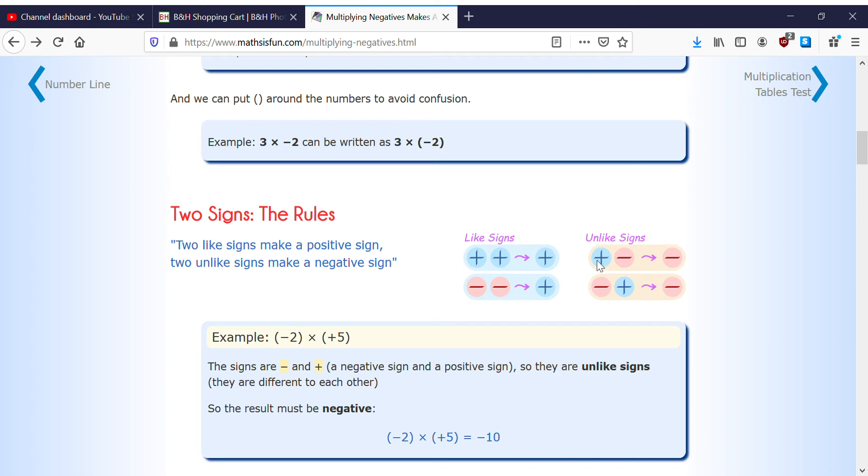So the unlike signs are like plus and minus, plus and minus. But just the like signs are just plus and plus or minus and minus. So the unlike signs make negatives, the like signs make positives.